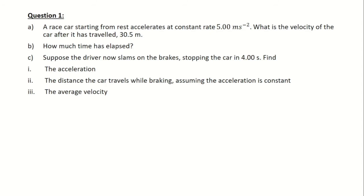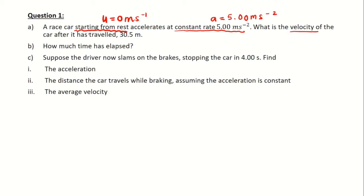Let's try the first question where we have a race car starting from rest, so u equals zero — that is the initial velocity — and it accelerates at a constant rate, a equals five meters per second squared. The question asks to find the velocity after it has traveled 30.5 meters, which is the displacement.